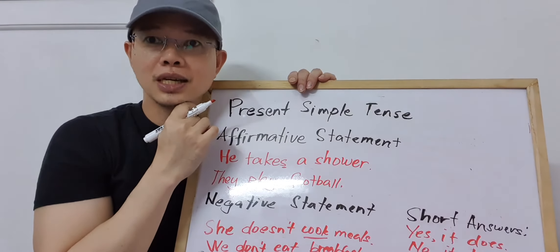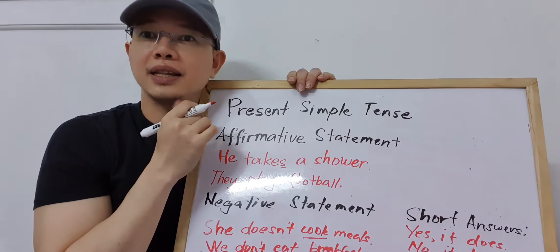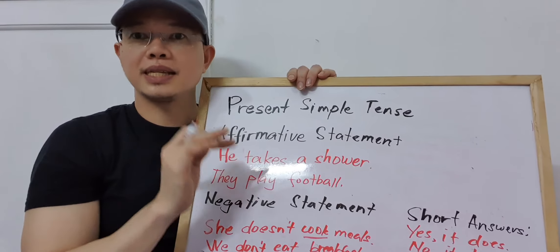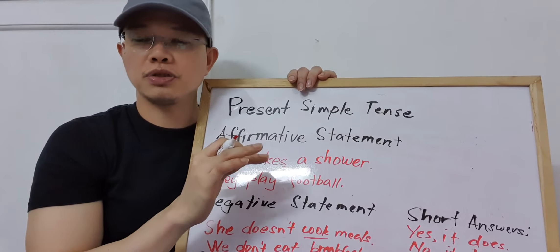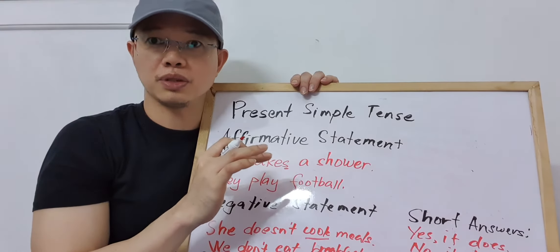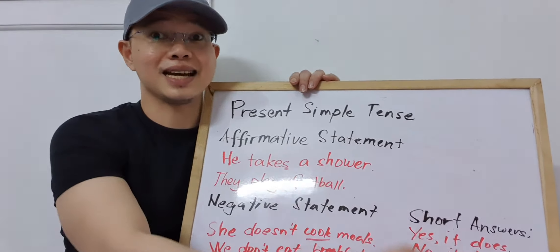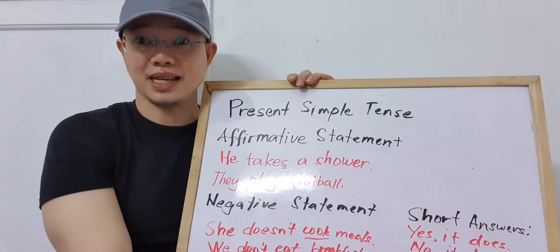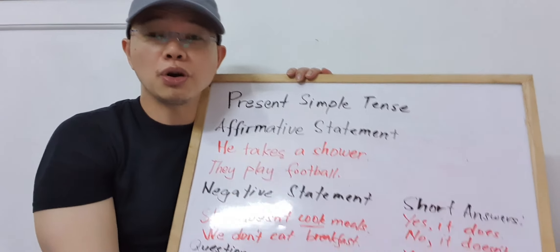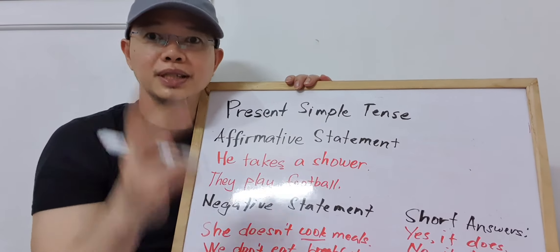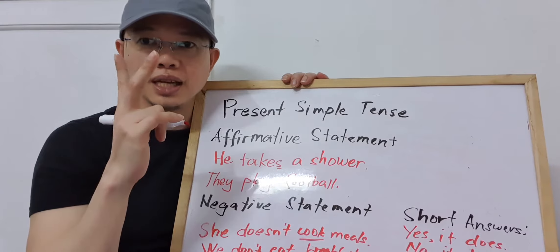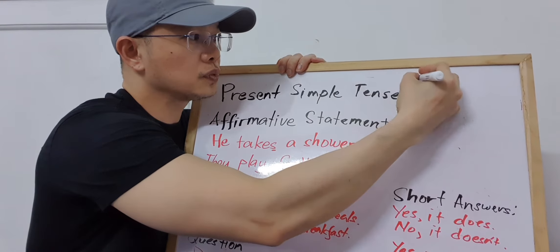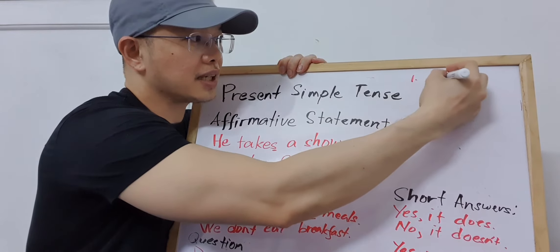If something is happening now, Present Simple is not the right tense. Present Continuous or Present Progressive should be used — that means the 'be' verb plus the '-ing' form. You only use Present Simple in two situations.